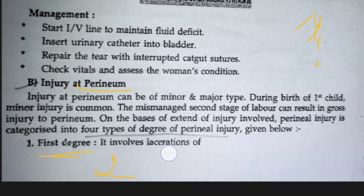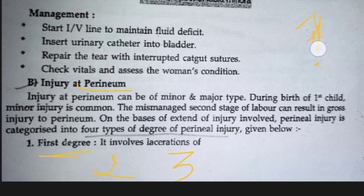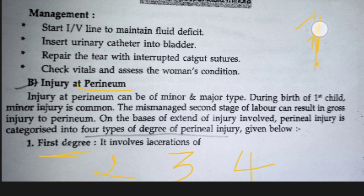Third degree is when the tear from the vagina is about to reach the sphincter of the anus. Fourth degree is when the tear has reached the anus — there is a cut between the anus and the vagina. These are the four degrees seen in perineum injury.